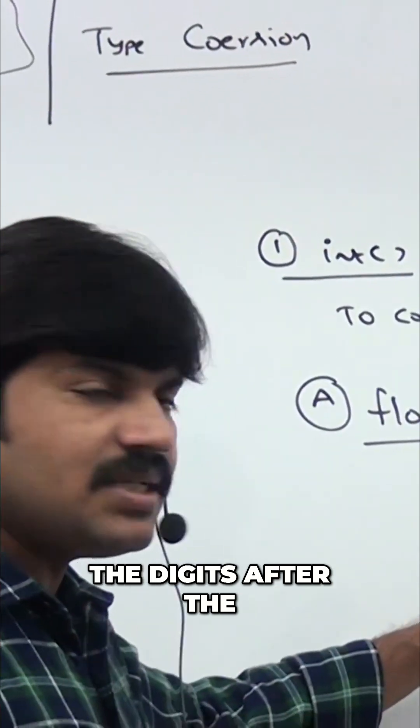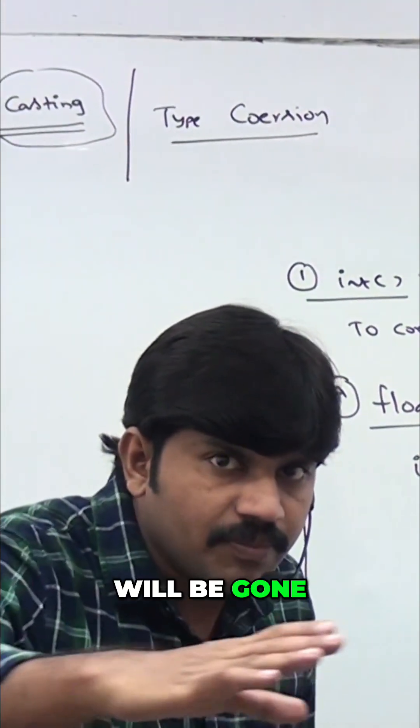Now what is the equivalent int value we are going to get? Just only 10, that's all. So float to int type conversion is possible. What is the rule? The digits after that decimal point by default will be gone.